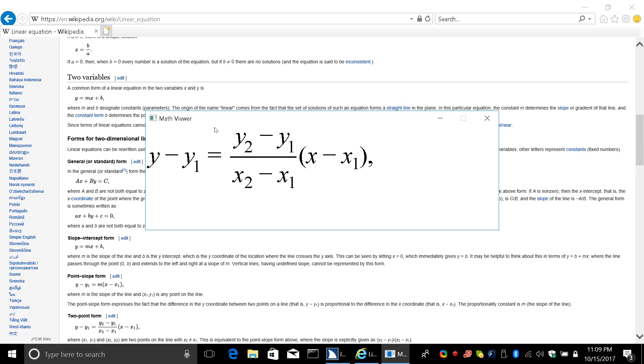Why? Minus Y sub 1 equals. I'm just hitting right arrow continuously. Y sub 2 minus Y sub 1 over X sub 2 minus X sub 1. And one more. Left parent X minus X sub 1 right parent.